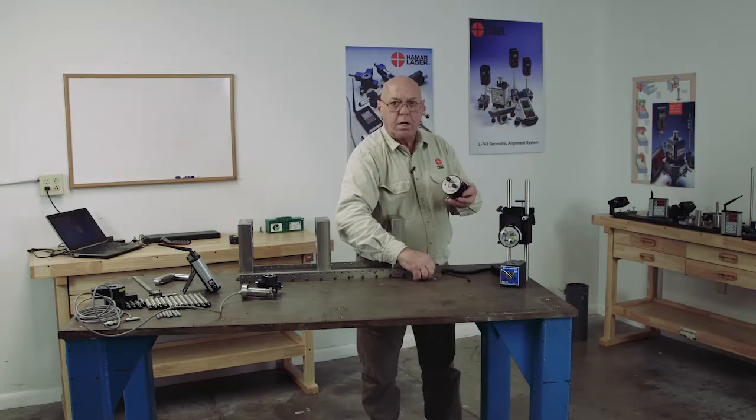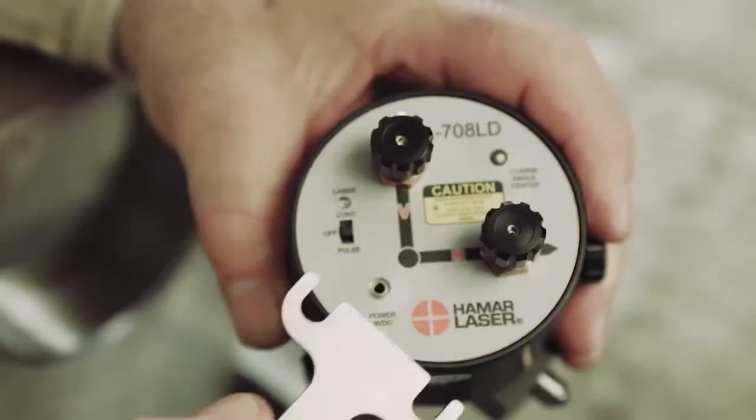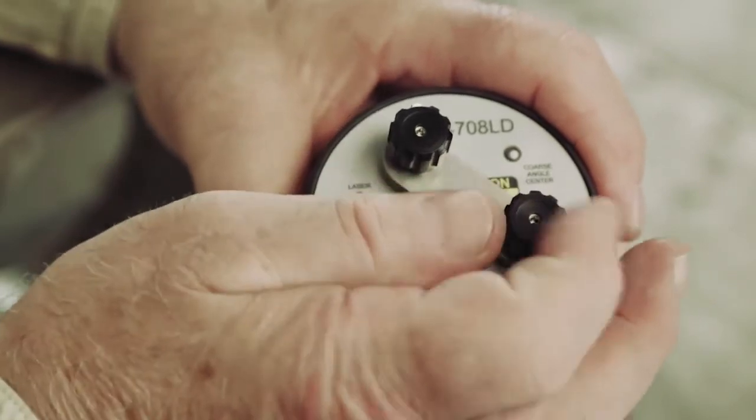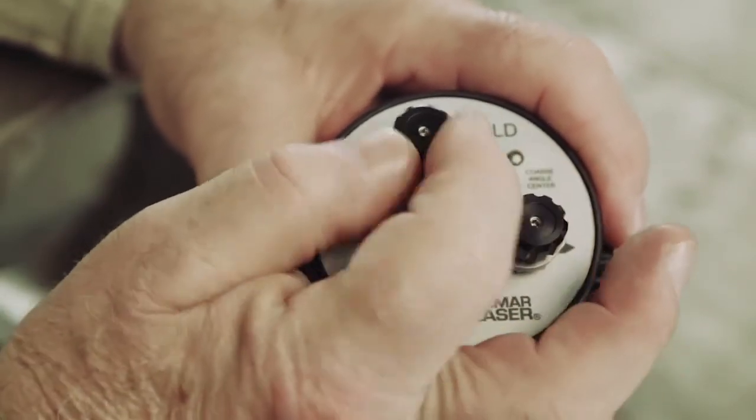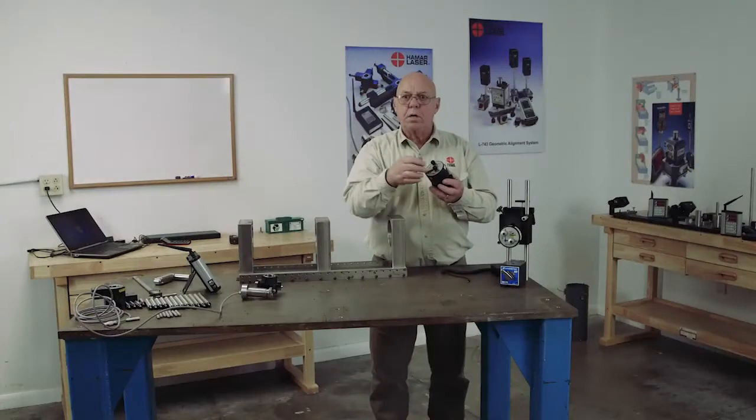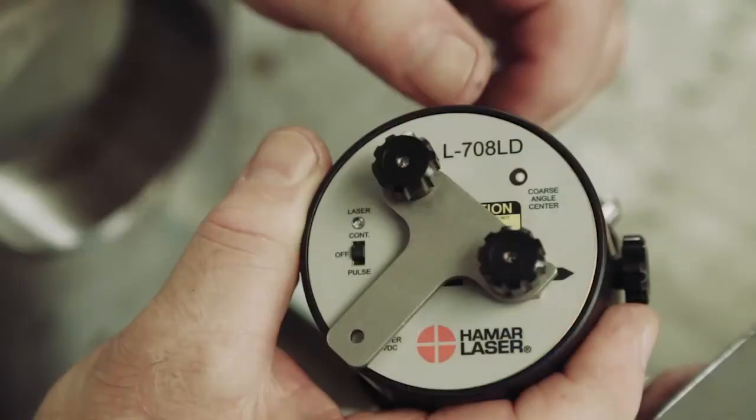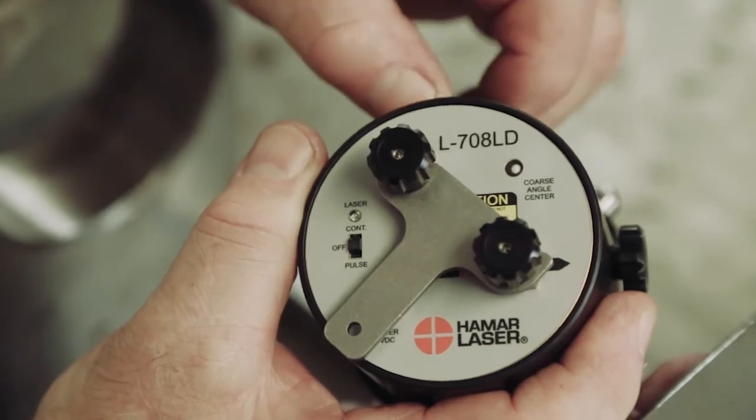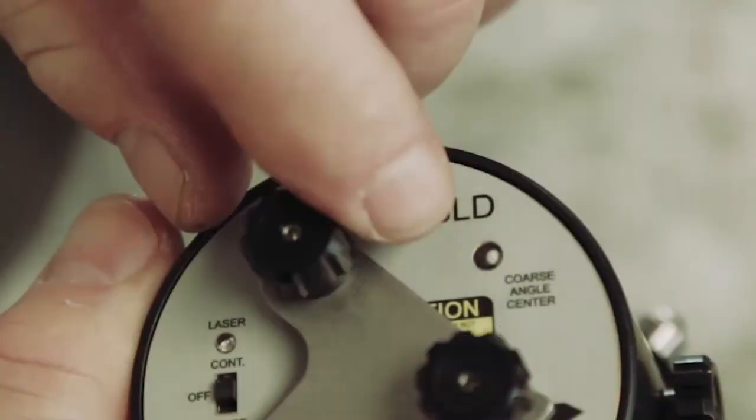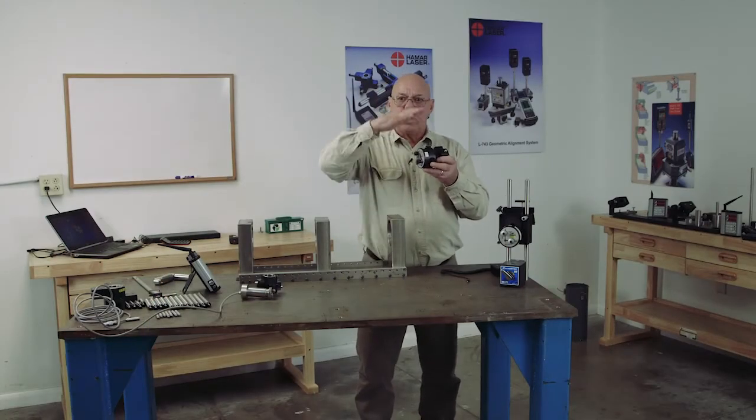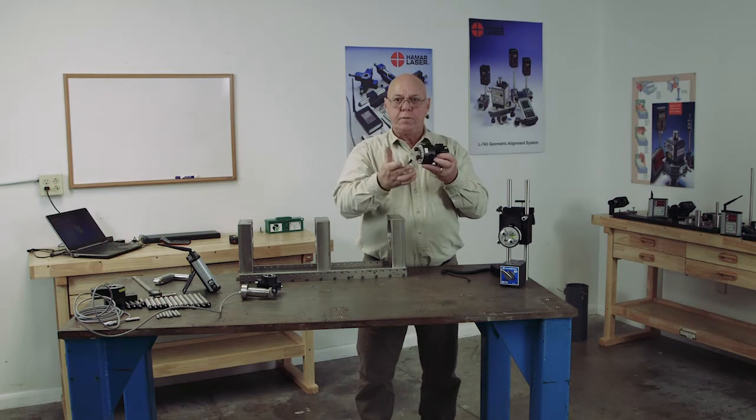Before I start, we have this gauge that is going to slide underneath here, and we're going to tighten these fine adjustments up, not torque them, just bring it up so it touches and holds the gauge in place. Then we can adjust these coarse adjustments until this white dot is in the center of this opening here. What that does is give us equal adjustments both ways on all of the adjusters.